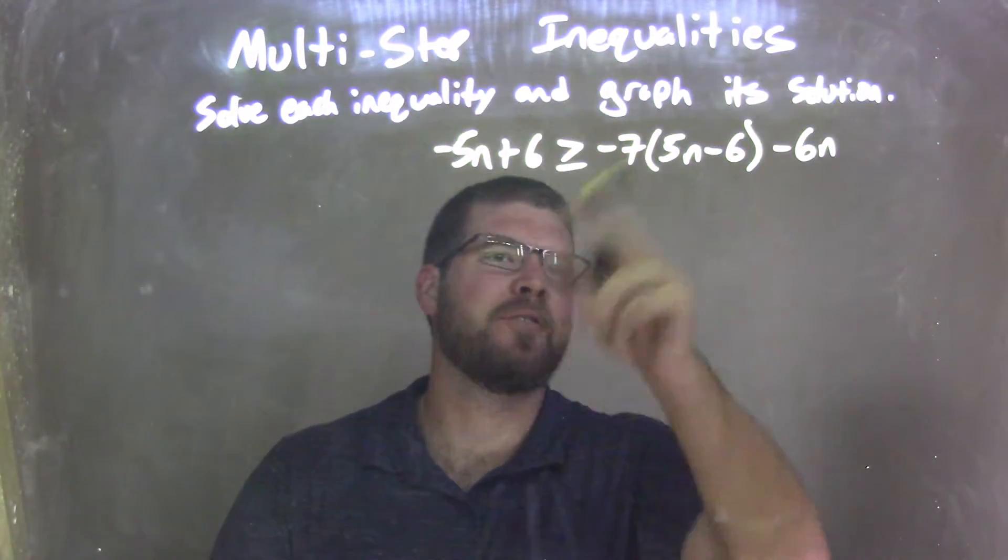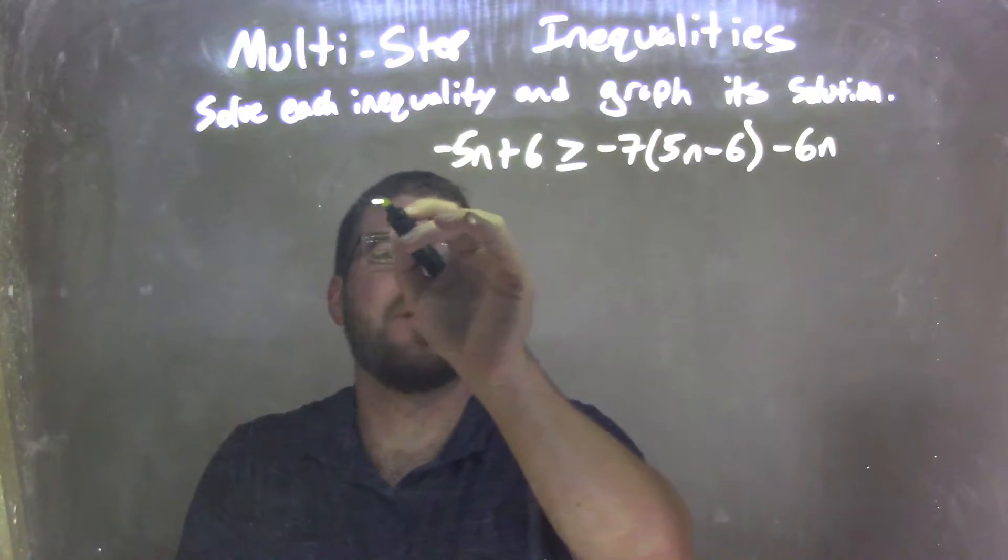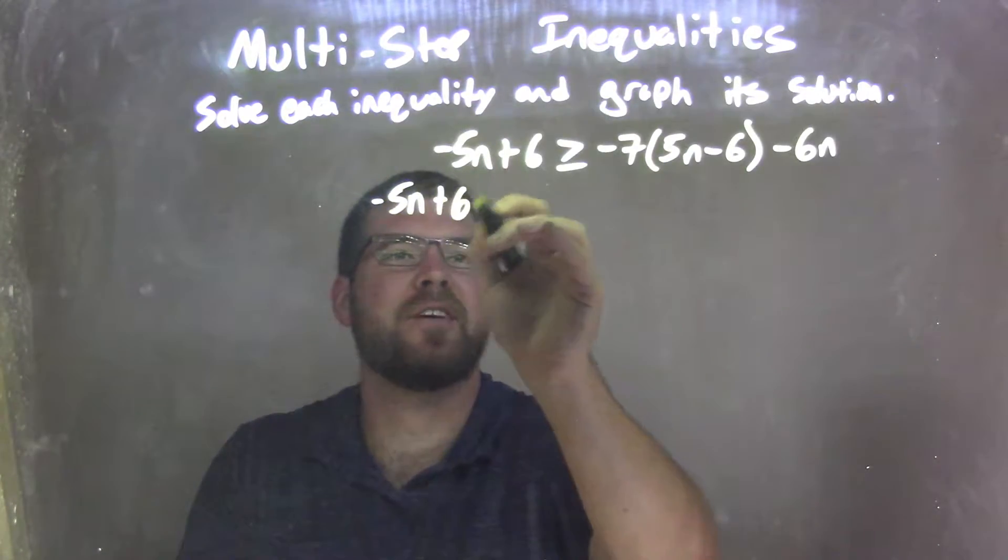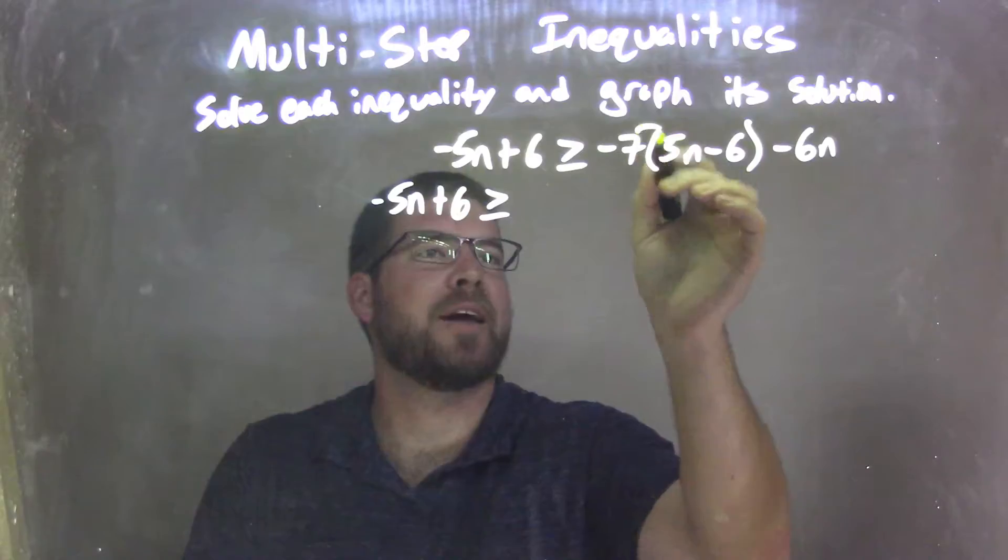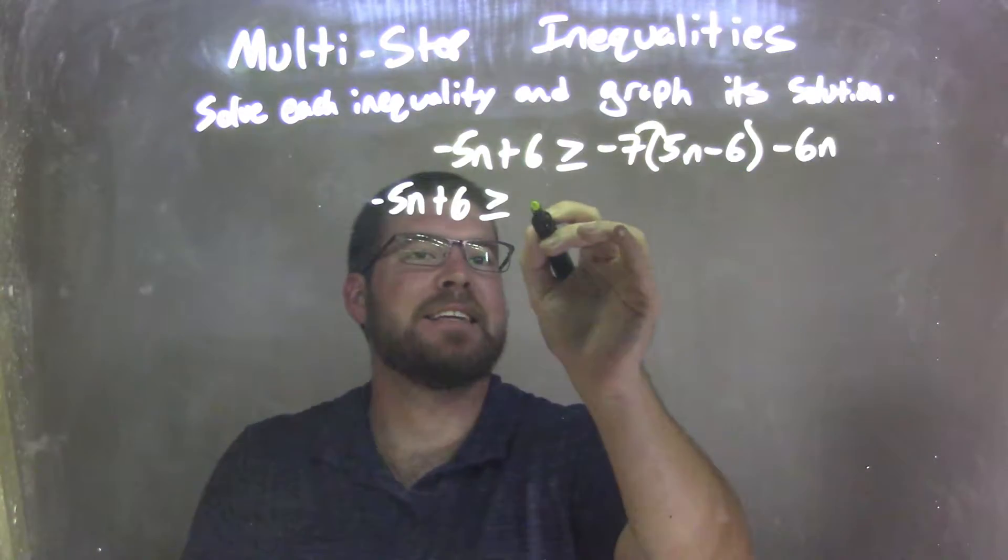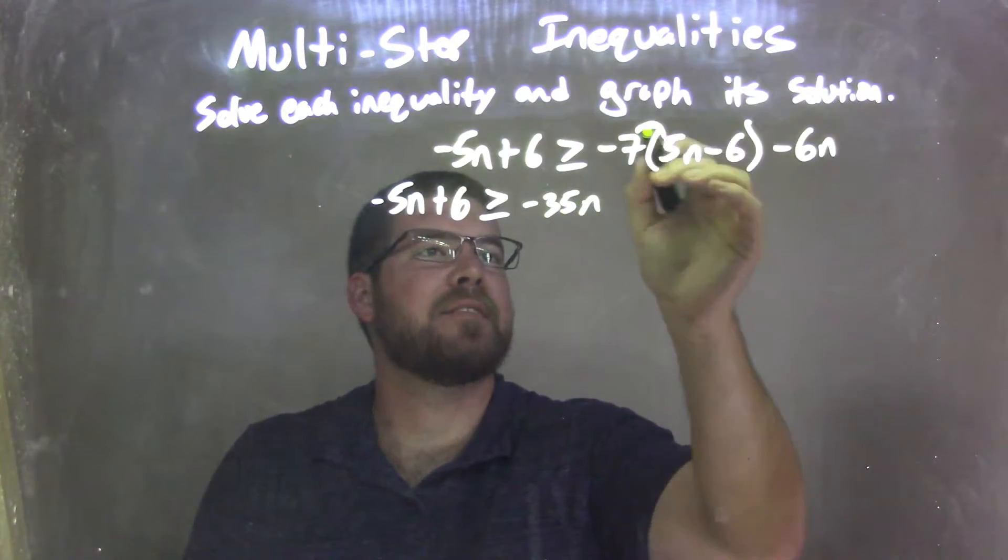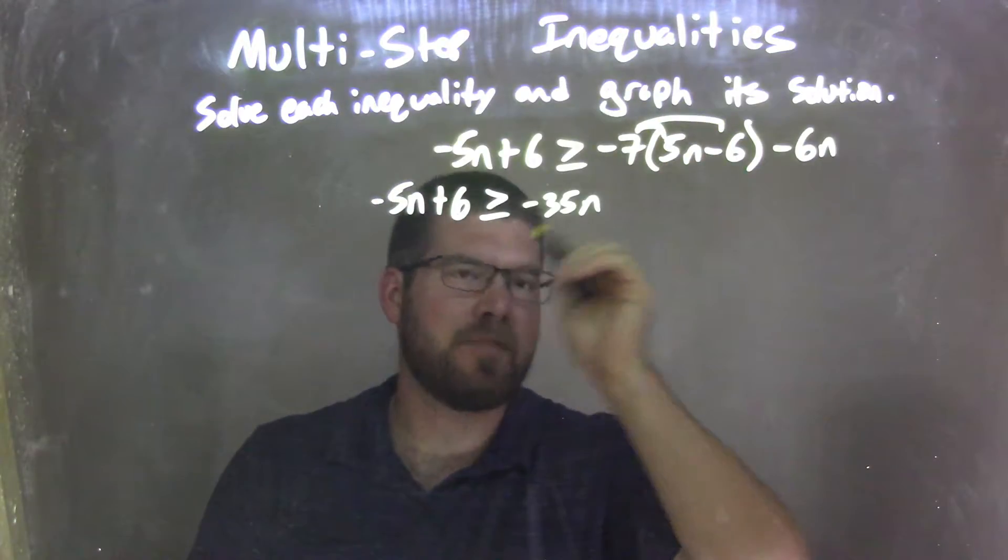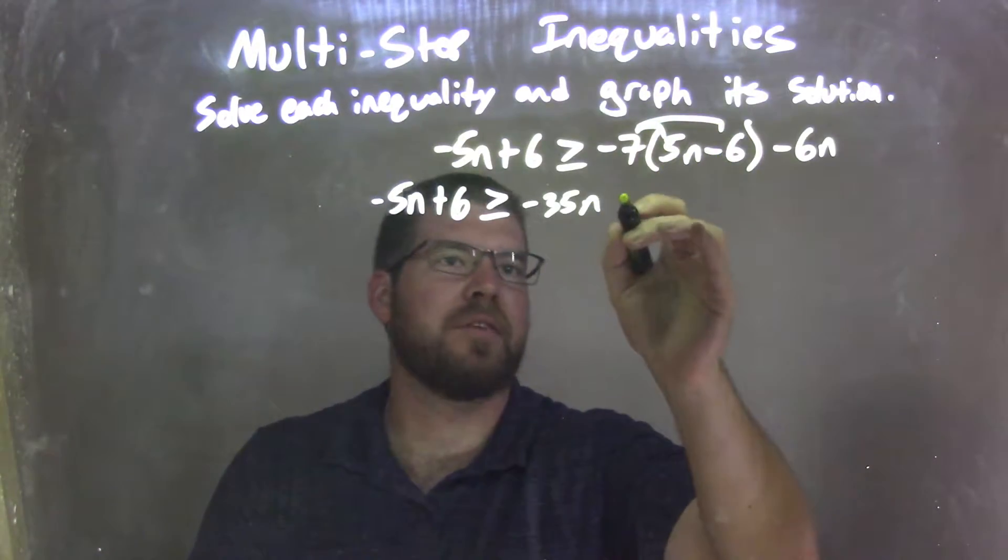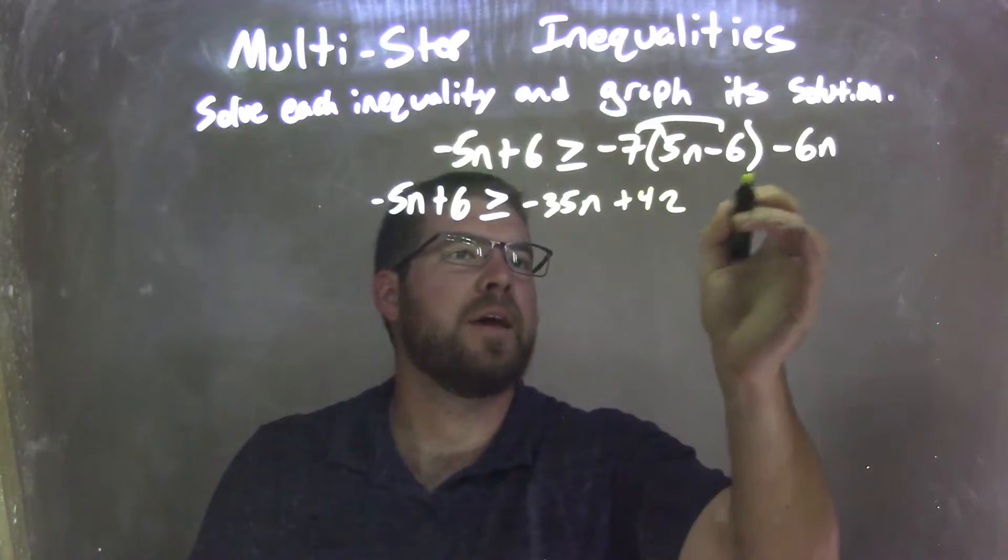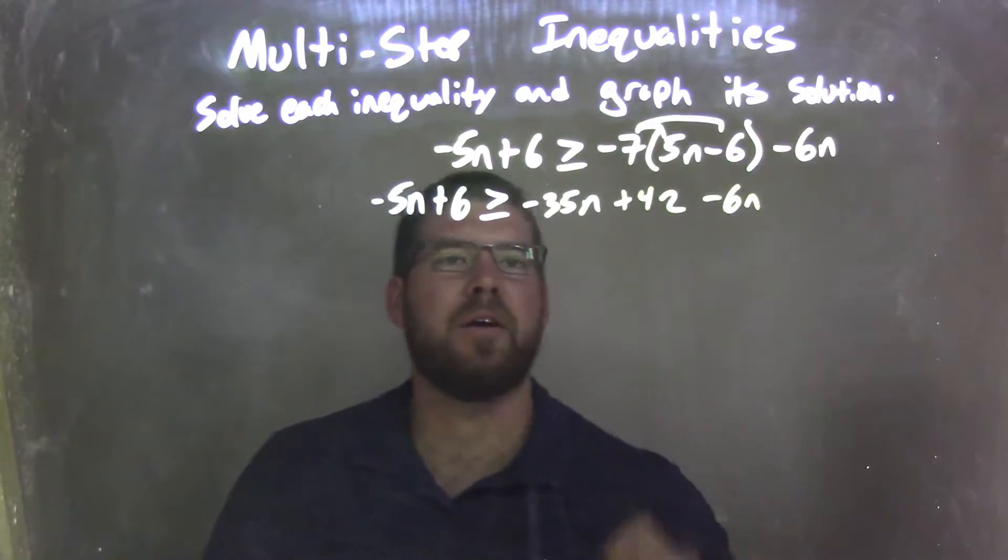So my first step is I'm going to distribute that negative 7. Let's rewrite this over here. Negative 5n plus 6 is greater than, distribute negative 7 times 5n is negative 35n. And negative 7 times a negative 6, which is positive, or plus a negative 6, is a positive 42. And then that's minus 6n on the right.